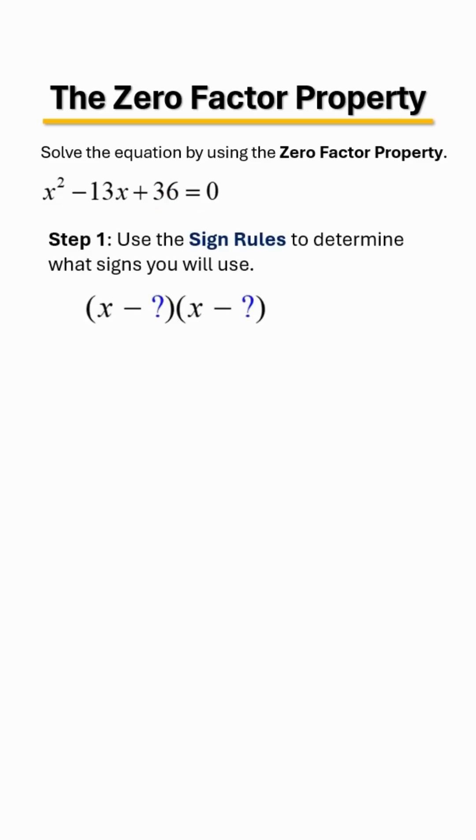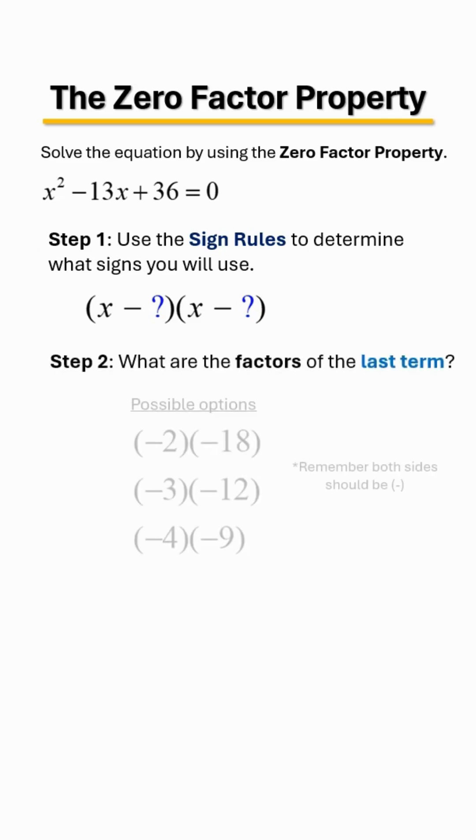...is look at the back end number to get factors of 36. So here are the possibilities of how you can get 36. Notice that both terms are negative, so which one of those when you multiply them is going to equal your last term of 36...